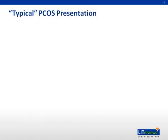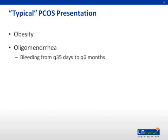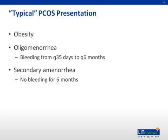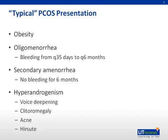Although people can present with varied symptoms, there's a typical presentation for the average PCOS patient. Most patients are obese. They typically have oligomenorrhea, which means bleeding less frequent than normal, with a cycle length between 35 days and 6 months. They could also have secondary amenorrhea, which is no bleeding for 6 months. They also have symptoms of hyperandrogenism, such as deepening voice, clitoromegaly, acne, and abnormal or excessive hair growth.